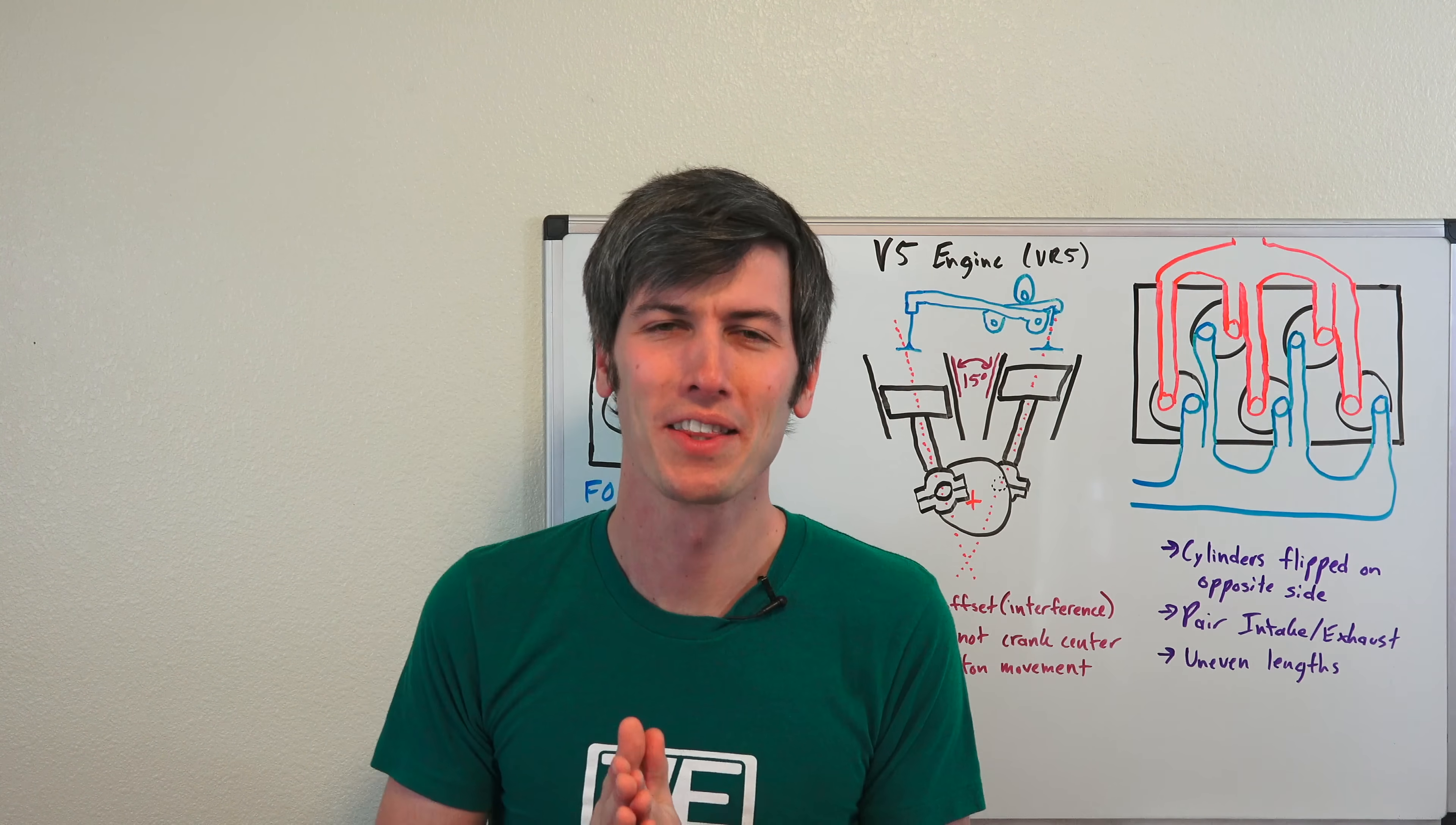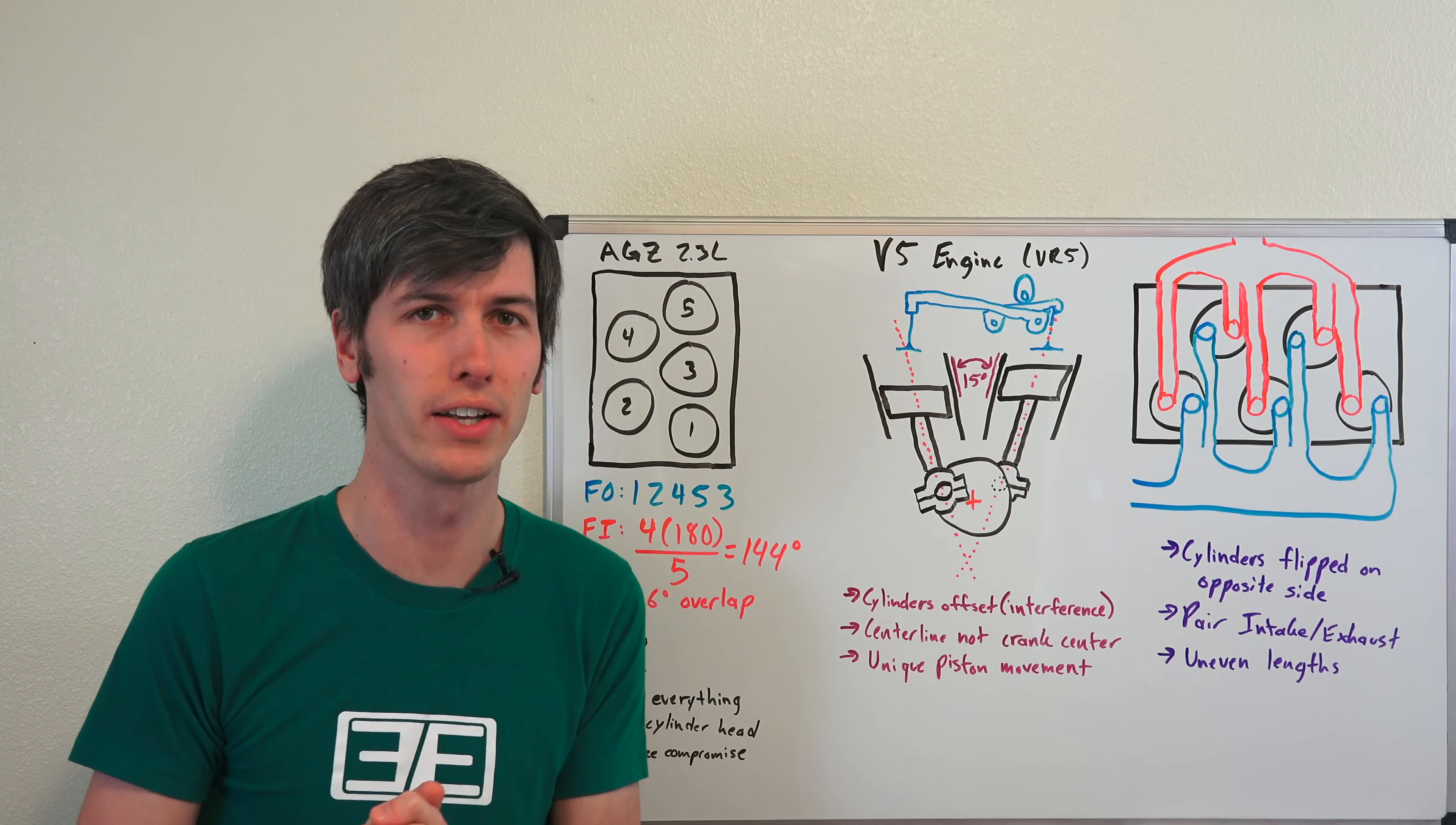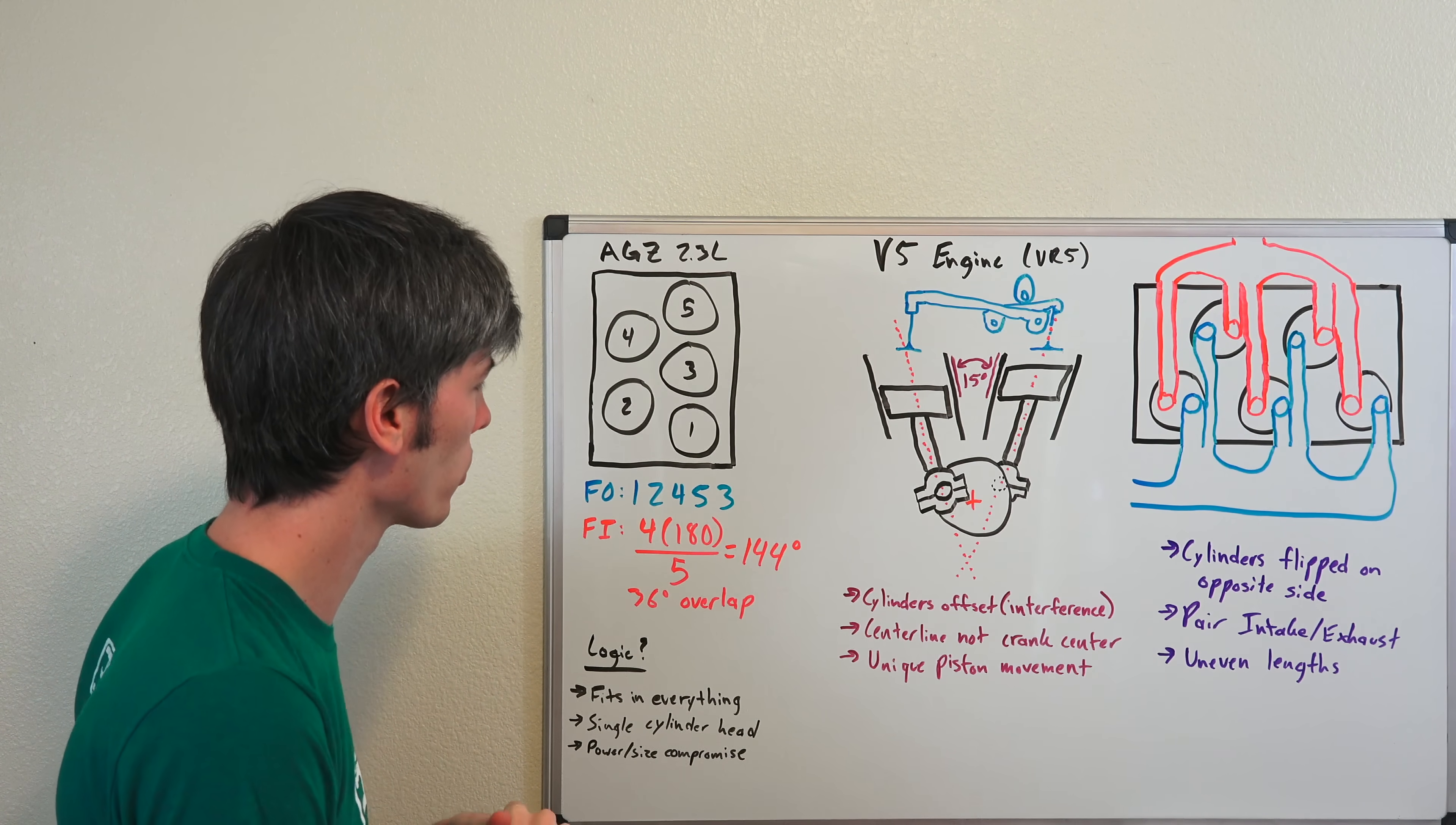Hello everyone and welcome. In this video we are talking about V5 engines, something there aren't very many of out there. Honda made a V5 engine for motorcycle racing and they were super successful with it. Volkswagen has what they call a V5 engine they used in the 90s and early 2000s. It's more appropriately called a VR5 engine. So that's what we're going to be talking about, the AGZ 2.3 liter VR5 engine out of Volkswagen.